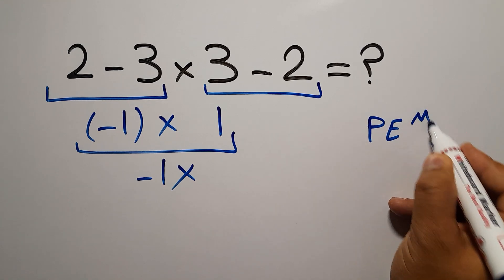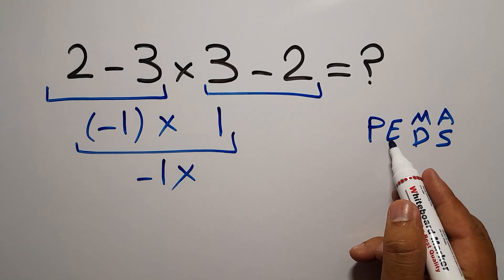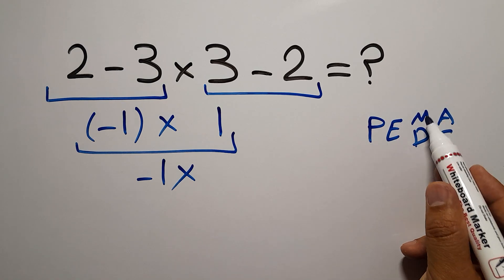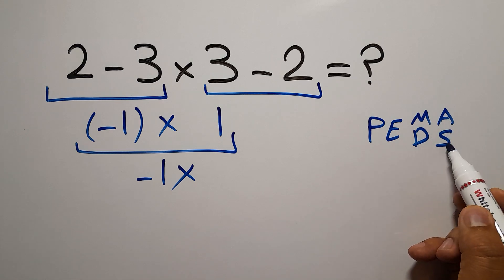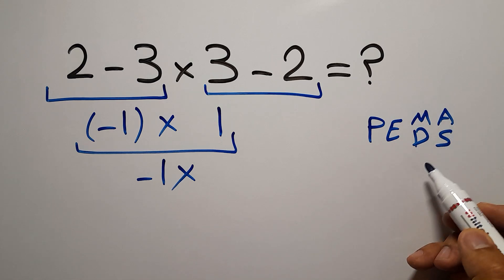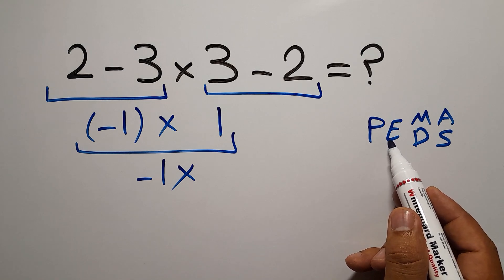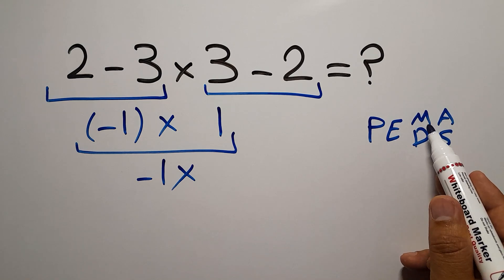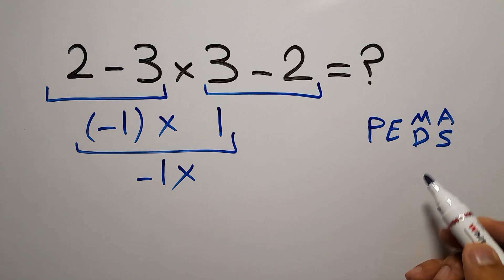P stands for parentheses, E stands for exponents, M and D stands for multiplication and division, and A and S stands for addition and subtraction. First, we have to do parentheses, then exponents, then multiplication or division, and finally addition or subtraction.